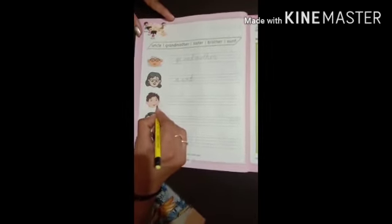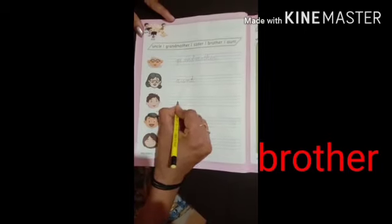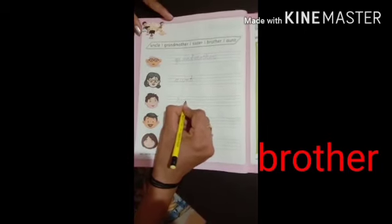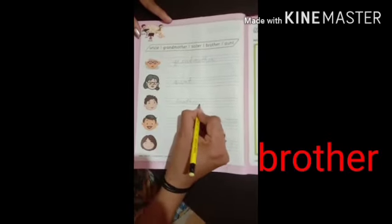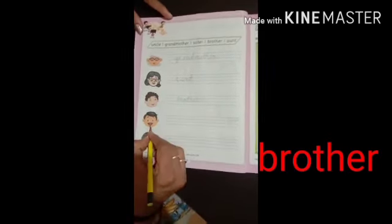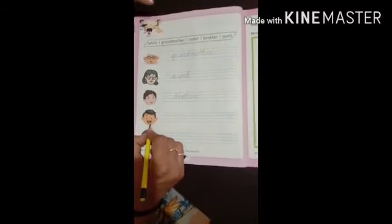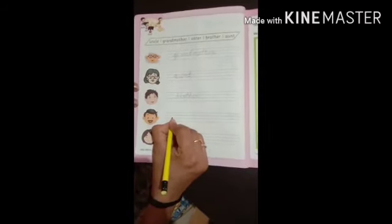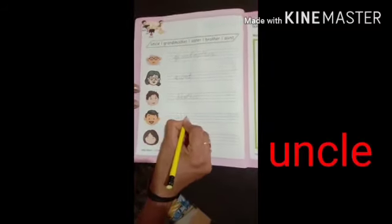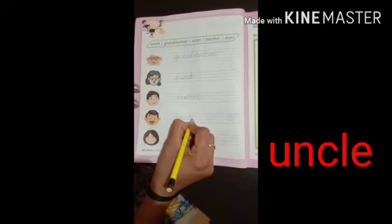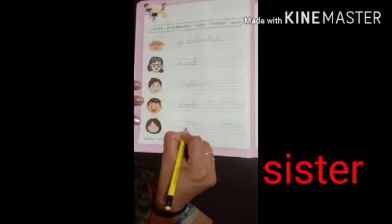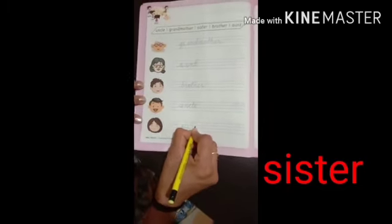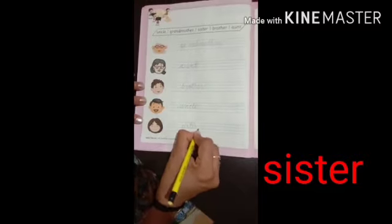Next — brother. B-R-O-T-H-E-R. Brother. Next — uncle. U-N-C-L-E. Uncle. Next — sister. S-I-S-T-E-R. Sister. Okay.